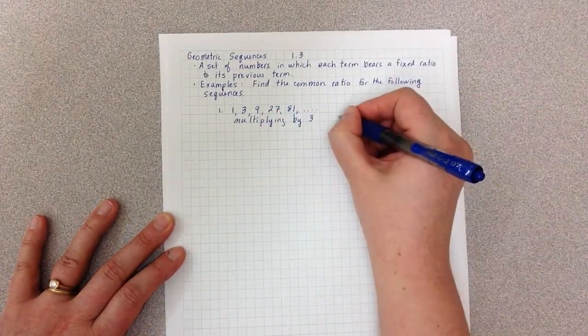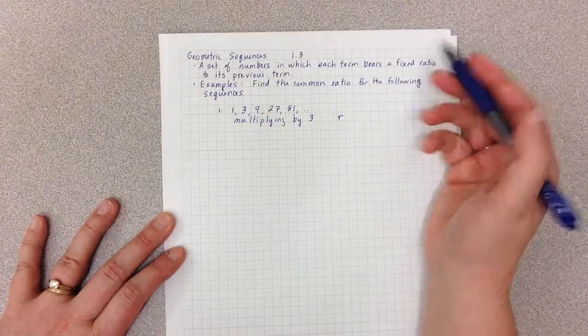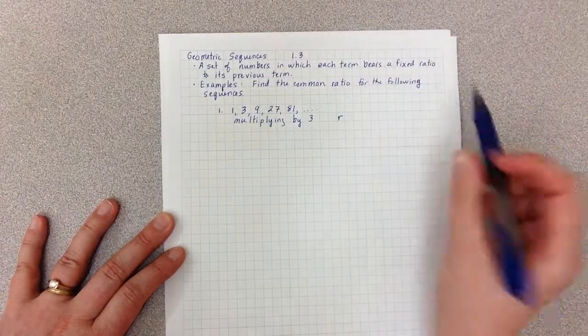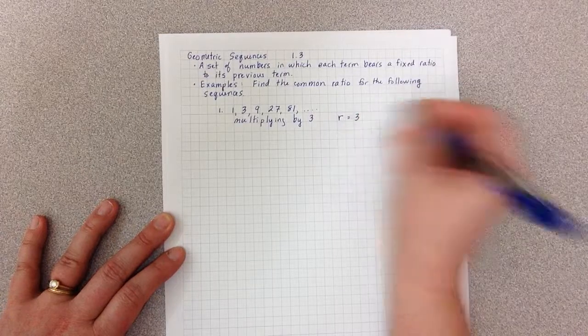So we use the letter R to stand for common ratio, and we say R equals 3.